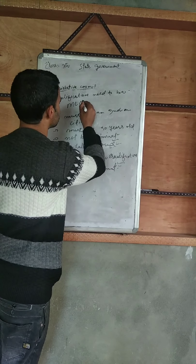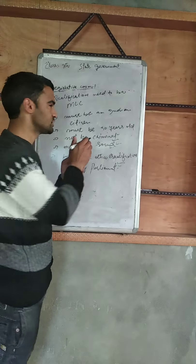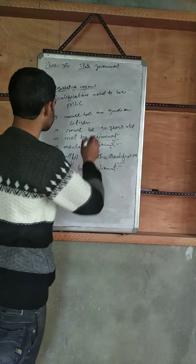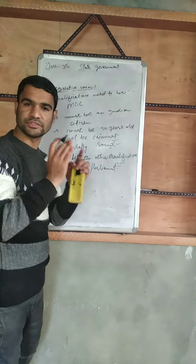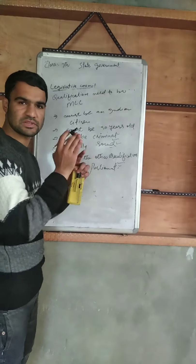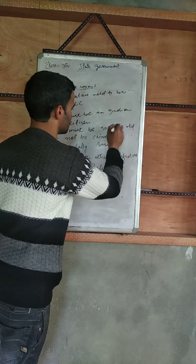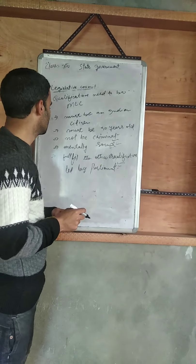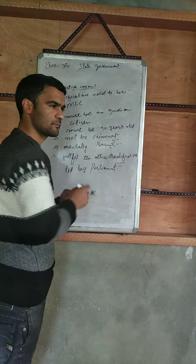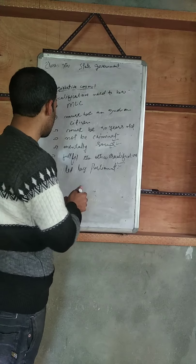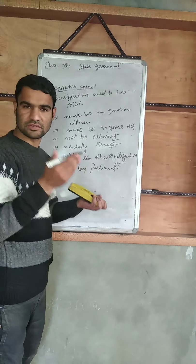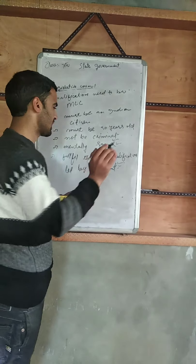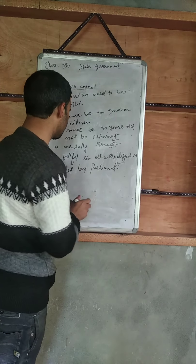Now let us discuss the qualifications needed to become an MLC (Member of the Legislative Council). First, the candidate must be an Indian citizen. Second, the candidate must be at least 30 years of age — not less than 30. Third, the candidate must not be a criminal. Another qualification is that the candidate must be mentally sound — only a mentally sound person can contest the MLC election.